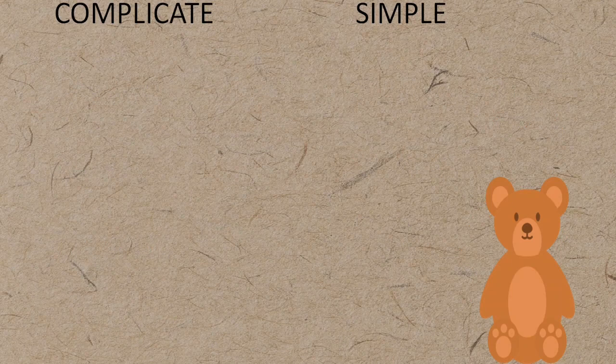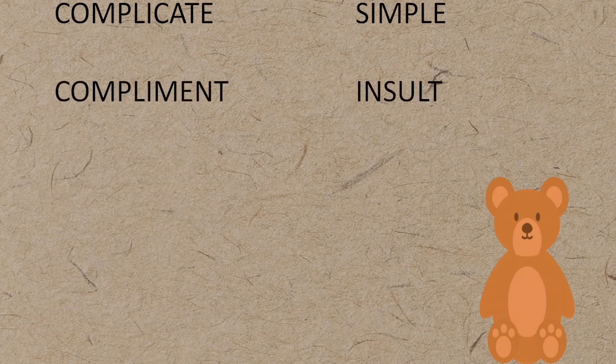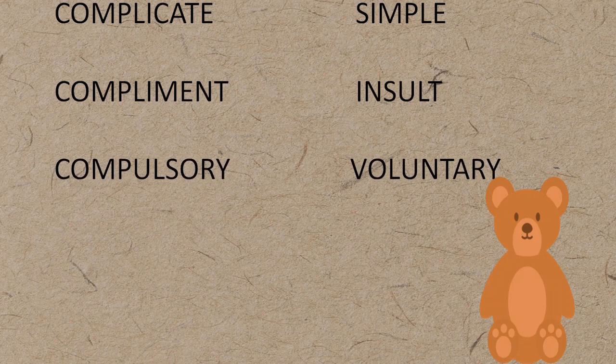'Complicated' (जटिल) — opposite: 'simple' (सरल). 'Compliment' means प्रशंसा — जब हम किसी की तारीफ करते हैं तो इंग्लिश में उस word को 'compliment' बोलते हैं — its opposite is 'insult' (अपमान). 'Compulsory' (जरूरी) — opposite: 'voluntary' (ऐच्छिक, यानी आपकी इच्छा के अनुसार — if you don't mind, then you can leave it).